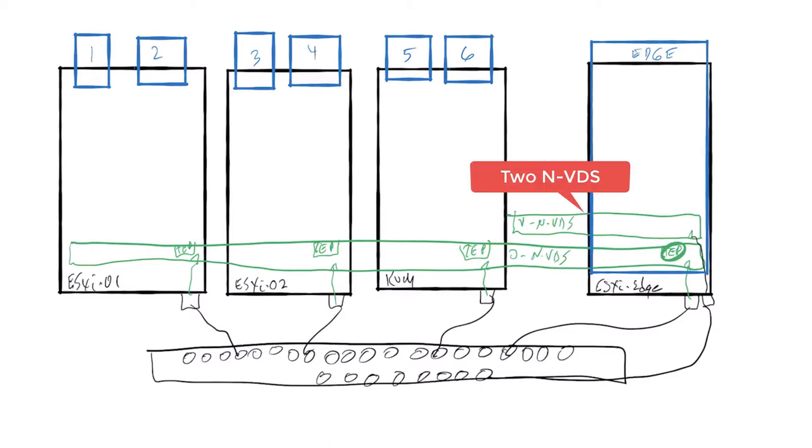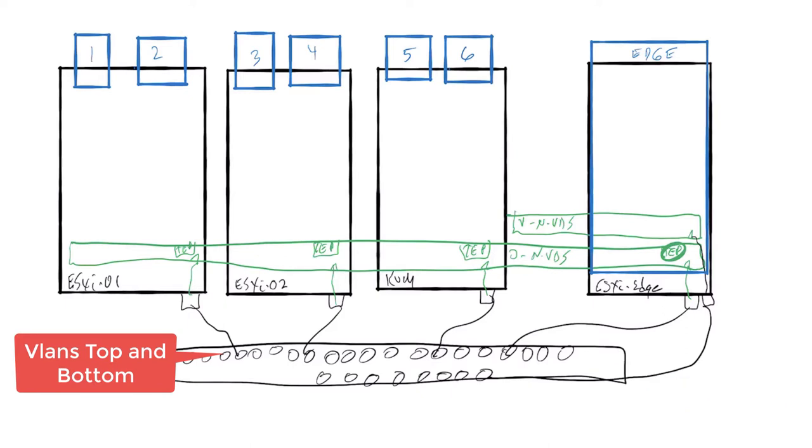The NVDSs are connected through their uplinks to the underlay that's represented with a fabric switch with two VLANs, a top VLAN and a bottom VLAN.